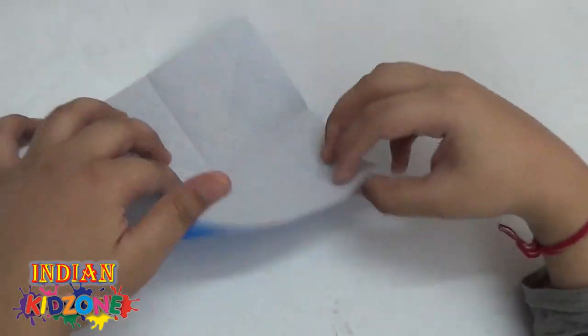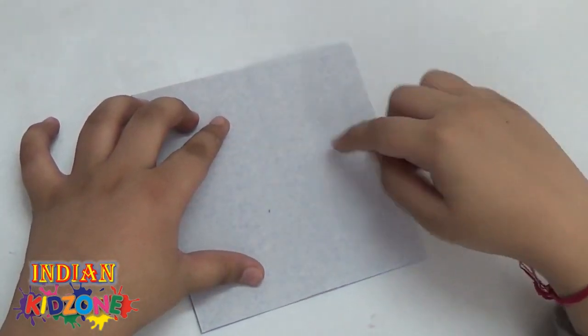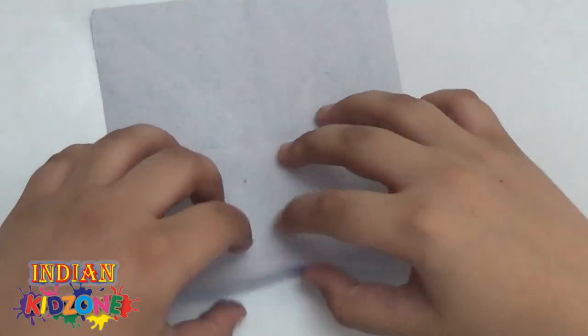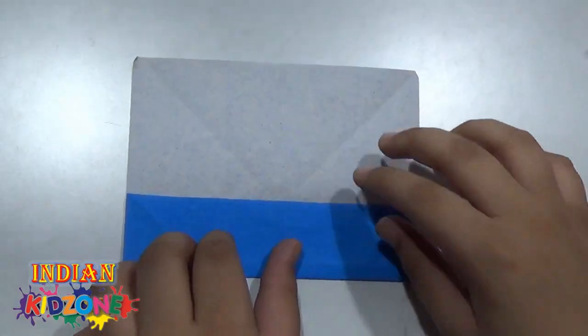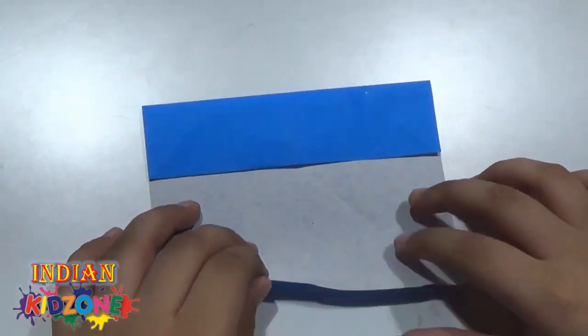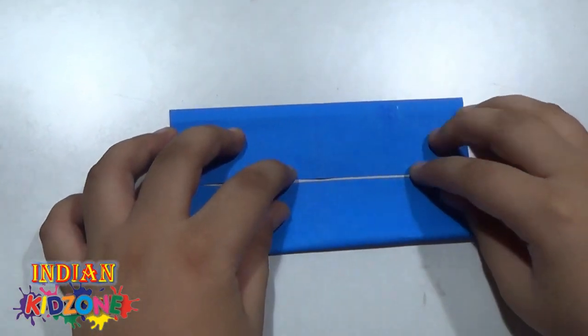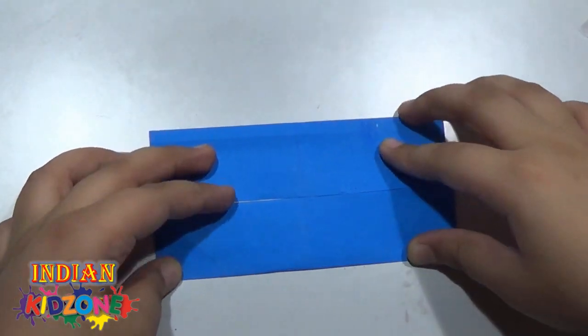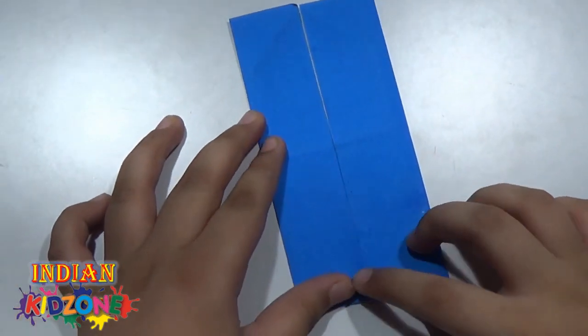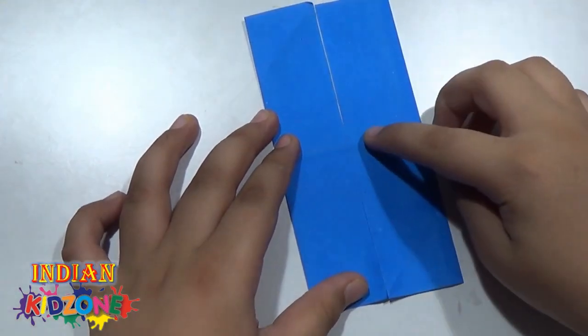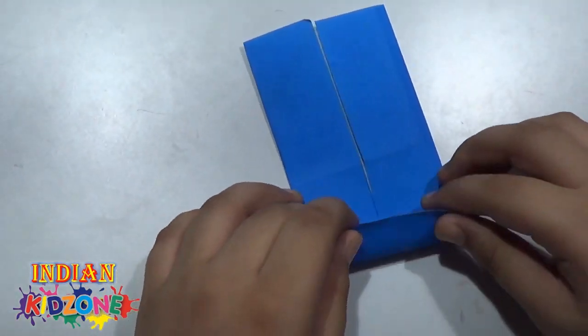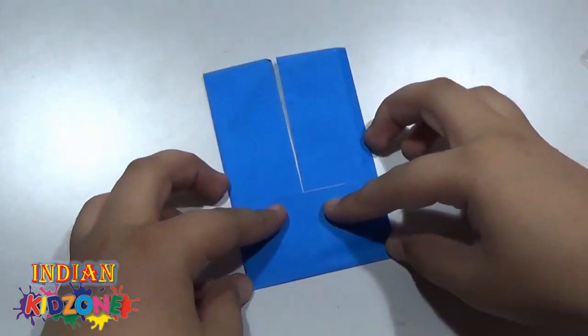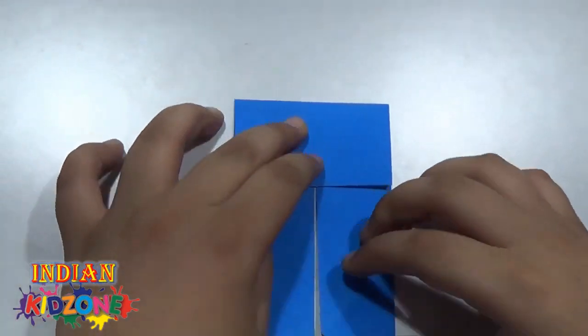Unfold and now you can see we have this plus sign. So let's fold this edge to this crease. Rotate and repeat. Crease it properly. Rotate and fold this edge to this crease. Crease it properly. Rotate and repeat.